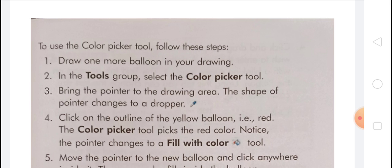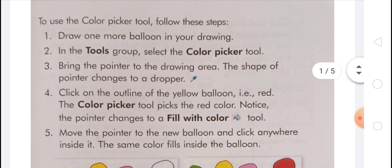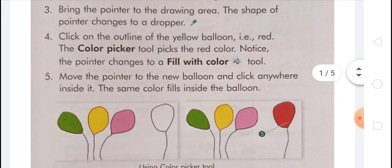The color picker tool is used to pick a color from the picture and fill exactly the same color in another area or object. To use the color picker tool: select the color picker tool in the tools group, then bring the pointer to the drawing area — the pointer shape changes to a dropper. Click on the outline of the object whose color you want to pick. The pointer changes to a fill with color tool; move the pointer to the new area and click inside it — the same color fills inside.